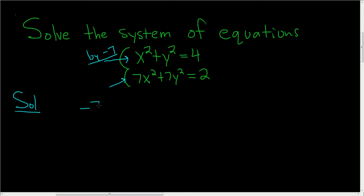If we do that, we get negative 7x² minus 7y². And then 7 times 4 is 28, but the 7 is negative, so this is negative 28. Then right below it, we can write 7x² plus 7y² equal to 2.